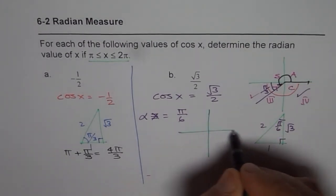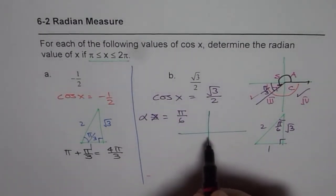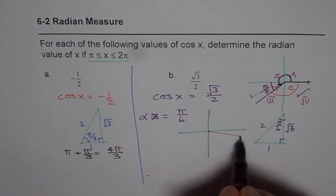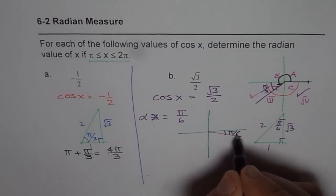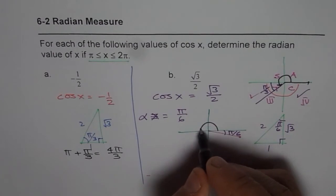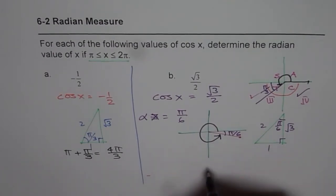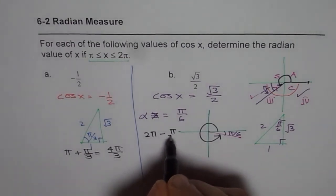In this particular case, we're talking about positive value, so we're somewhere here. We found that this acute angle is π/6. What is the principal angle? Principal angle is like that, which is 2π minus π/6.